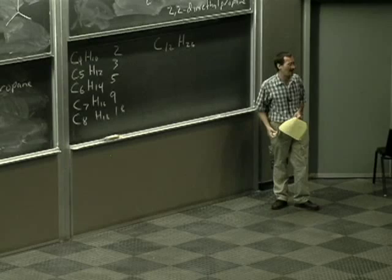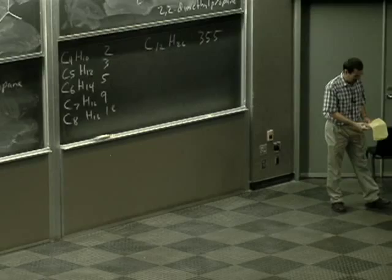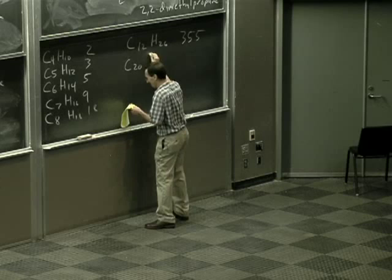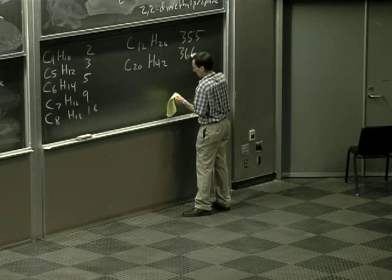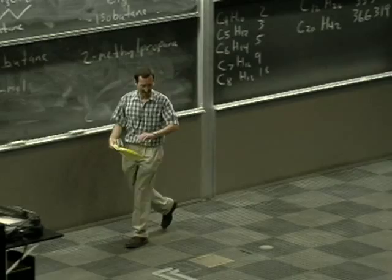So I was just talking to my colleague, and they paid him vast, his laboratory, vast sums of money for a few milligrams of obscure hydrocarbons. Dodecane has 355. I won't ask you to try to write all of those out. And icosane has a whopping 336,319 isomers. Definitely not something to end up writing out.